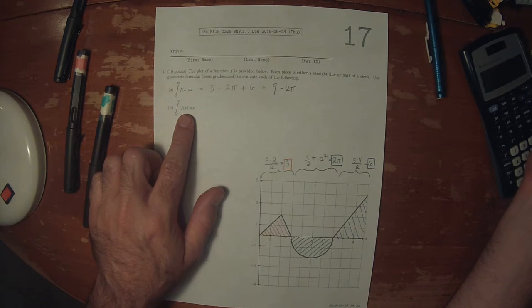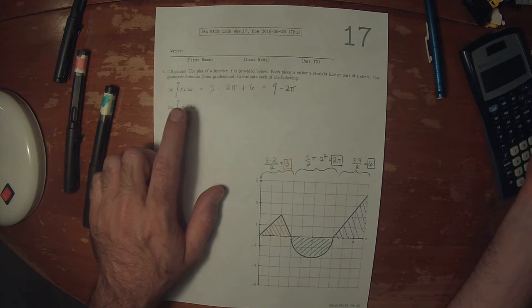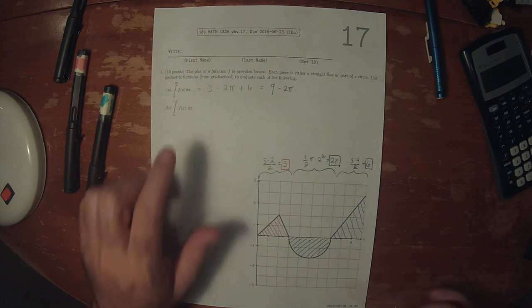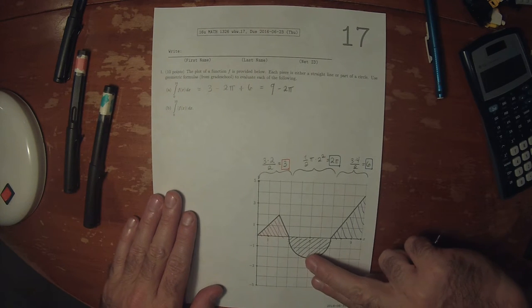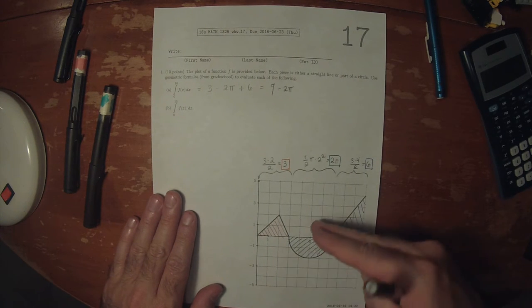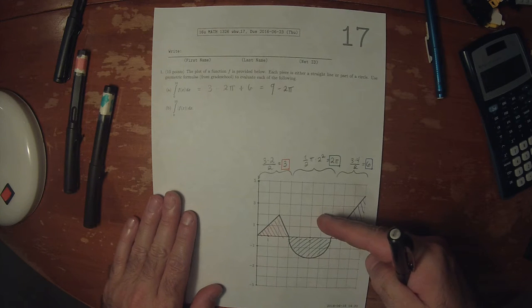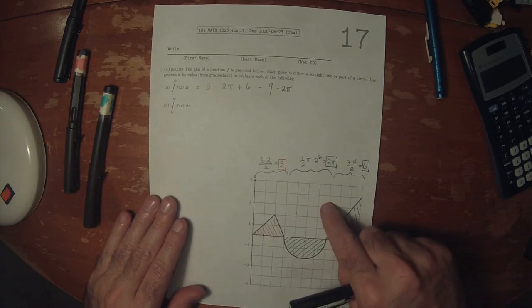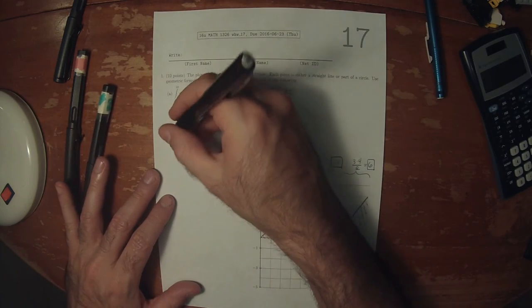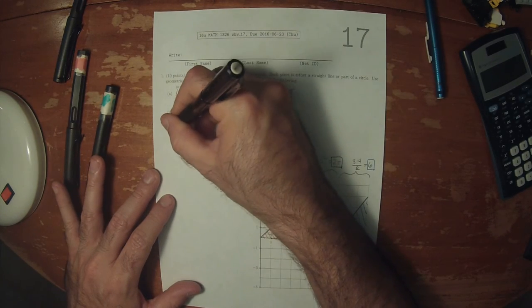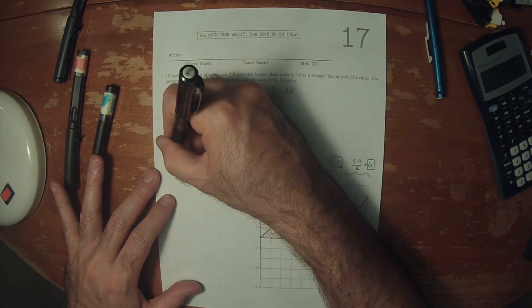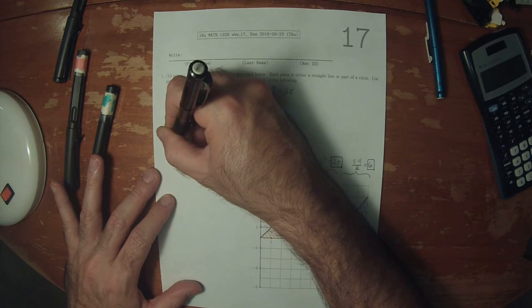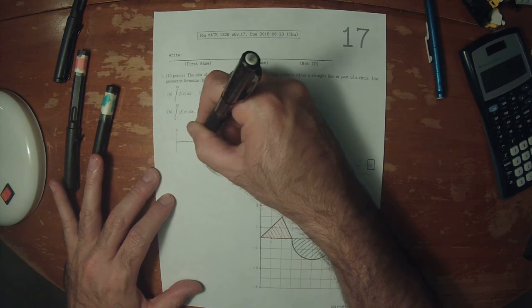Then, the absolute value of f has the effect of reflecting all the negative parts of f to the positive side of the y-axis. So the function that's being integrated here now looks like this. Just a rough sketch.